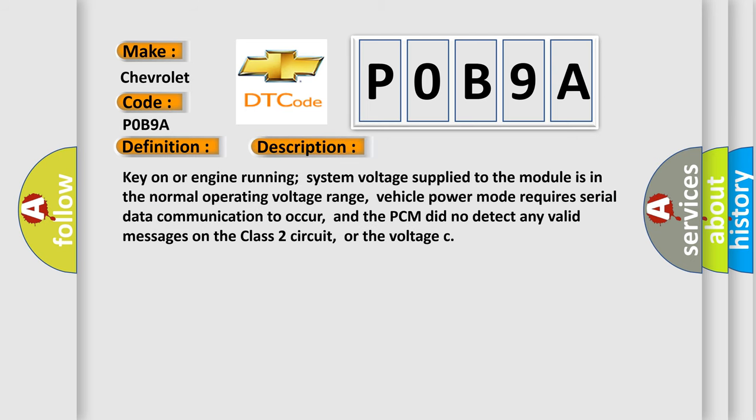Key on or engine running system voltage supply to the module is in the normal operating voltage range. Vehicle power mode requires serial data communication to occur, and the PCM did not detect any valid messages on the Class 2 circuit, or the voltage.